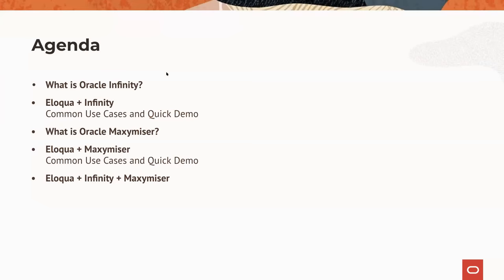From an agenda standpoint, we're going to start with Infinity — a quick high-level crash course on what it is and what it does, then put it in context of how you use Eloqua and Infinity together, covering common use cases and a demo. Then Michael will cover the same structure for Maximizer — a high-level overview and how Eloqua and Maximizer work together. If you've got questions along the way, put those in the chat. We have plenty of time at the end.